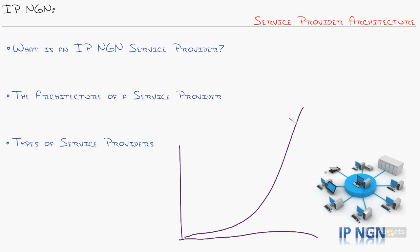So where does this leave the service provider in all of it? They're evolving as well. As a matter of fact, Cisco has created a whole model for it. They call it an IP Next Generation Network Service Provider, or NGN. That's what we're here in this nugget to unpack — what does that mean when you hear IP NGN service provider? What does that architecture look like? Where is it going? What are the different kinds of service providers?